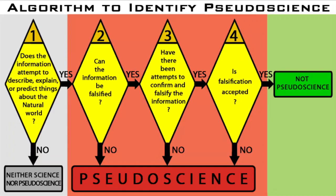The second question one must ask to identify pseudoscience is: can the information be falsified? If the answer to this question is no, then this means that the information cannot be proven wrong.